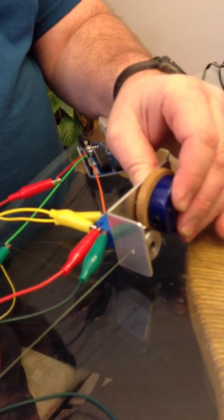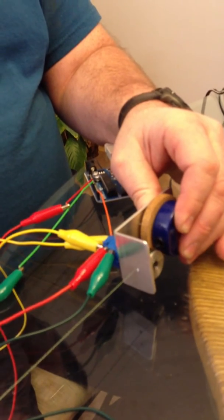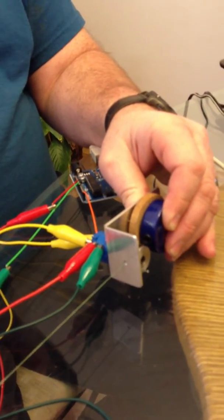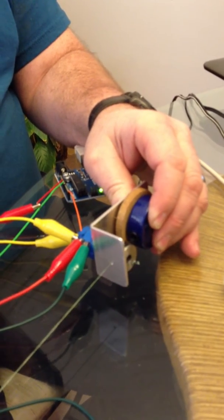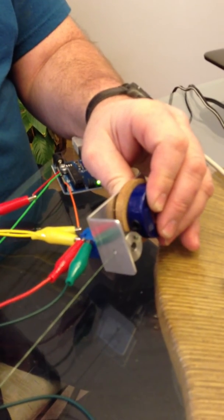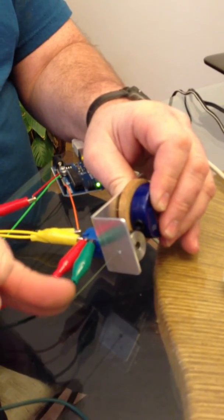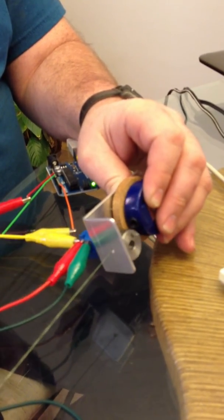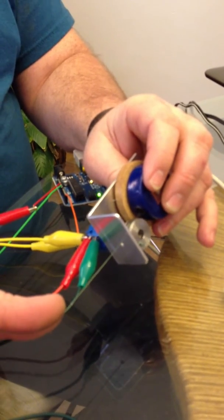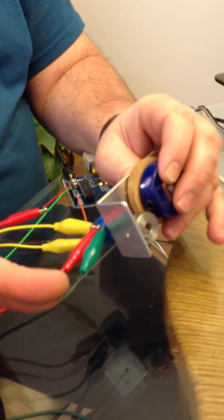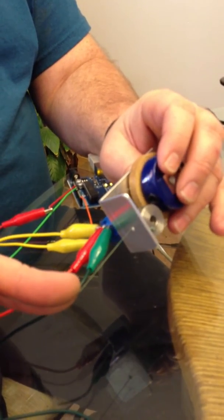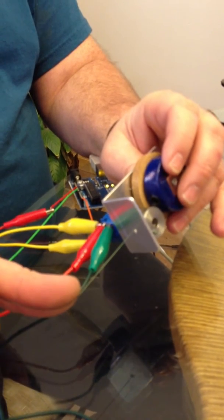It makes it very simple to hook up. And these are typically, you know, $170 or more. This one, the pot was a little bit expensive because it's a fairly decent 10-turn pot, so it was about $15 or $16 or something like that from Digi-Key.